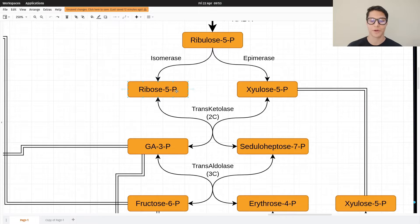Then ribose 5-phosphate with xylulose 5-phosphate get combined together with transketolase. Transketolase takes two carbons from one molecule and gives it to the other.